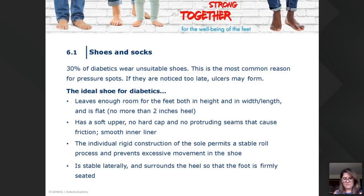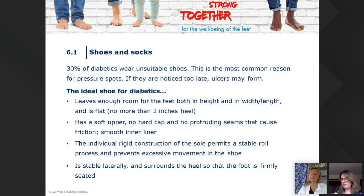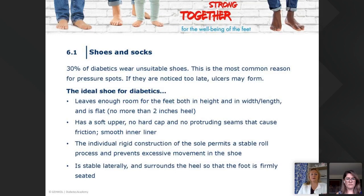The ideal shoes for diabetics should have enough room in both height and length, a heel no more than two inches, a soft upper, no seam that causes friction, a smooth inner liner, and an individual rigid construction of the soles that permits a stable gait.